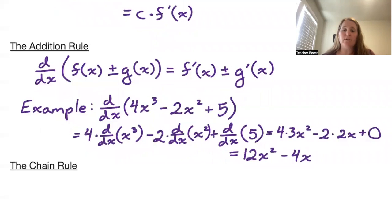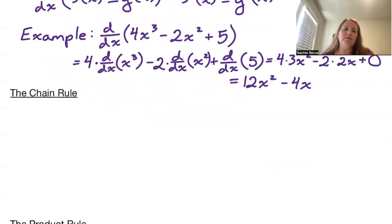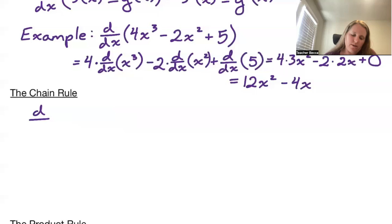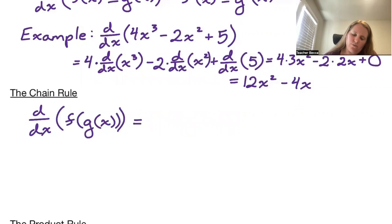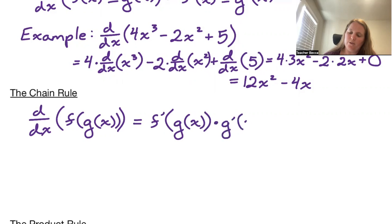Next up, we have our chain rule. The chain rule applies to a composition of functions. If we wish to take the derivative of f of g of x, this is equivalent to taking the derivative of f evaluated at g of x, and then multiplying by g prime of x.